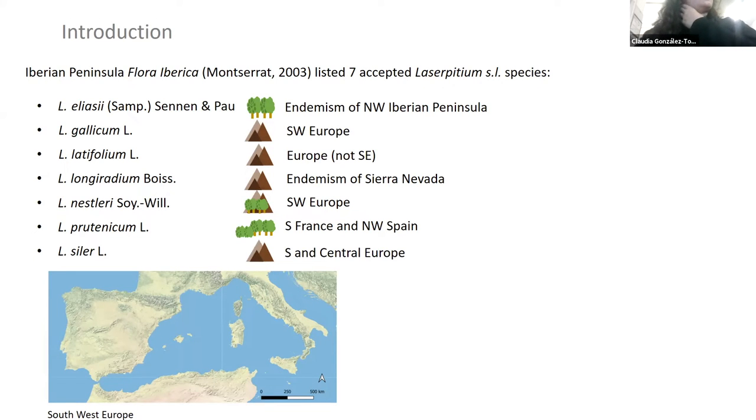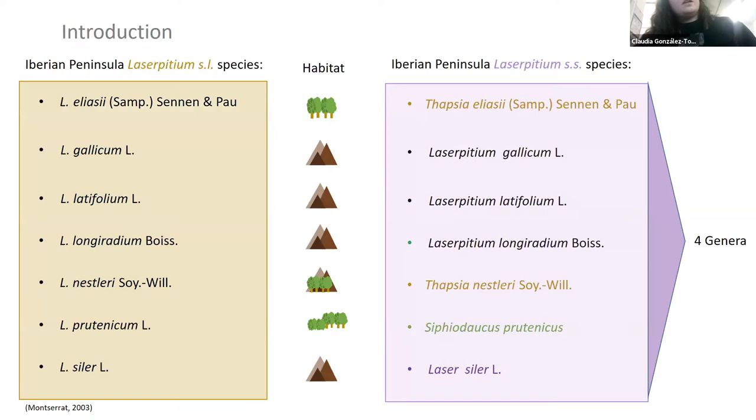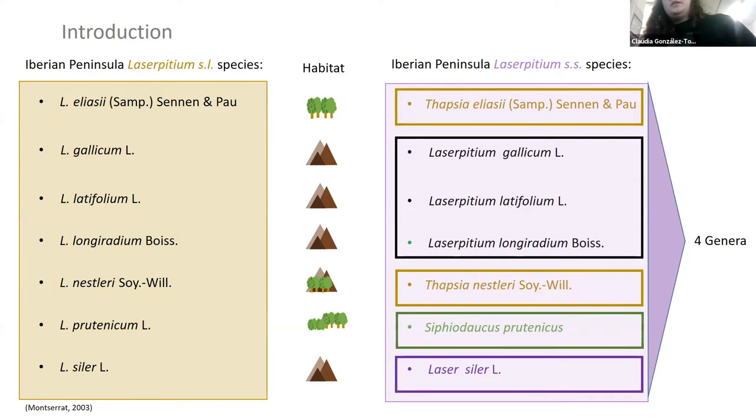Regarding the Iberian endemics, there's one which is a Sierra Nevada endemic, which is here just in front of Africa, which we don't have molecular data of. If we use a strict sense concept of Laserpitium, we found that there are actually three Laserpitium species, one of which we don't have molecular data about, two Thapsia species, one Siphidaucus species, and one Laser species.